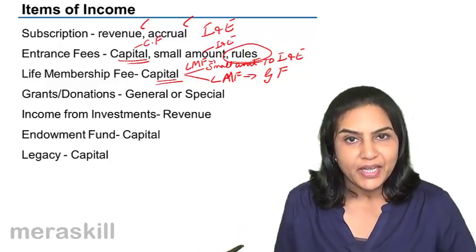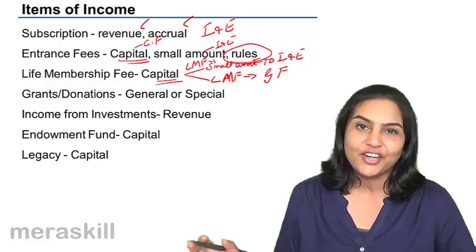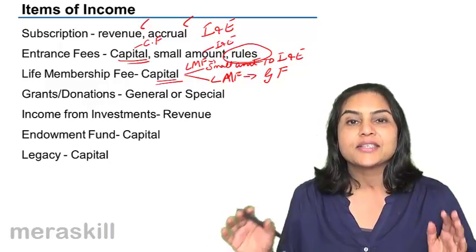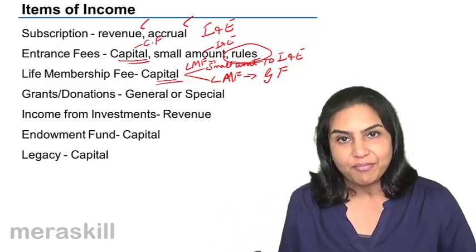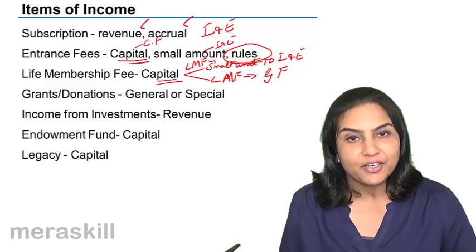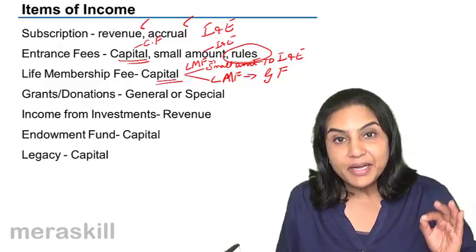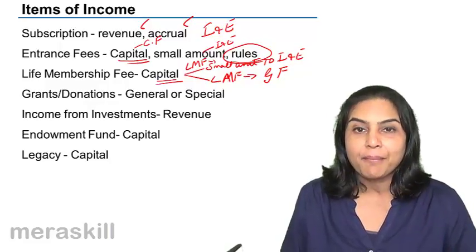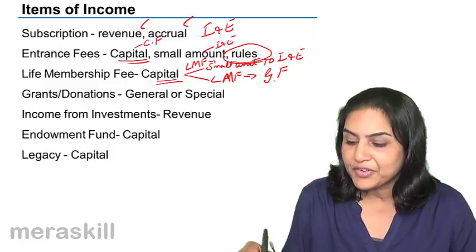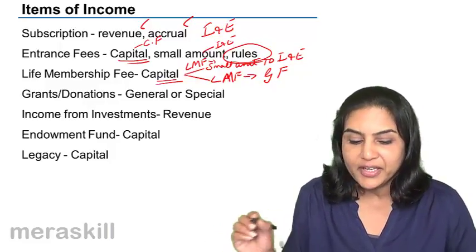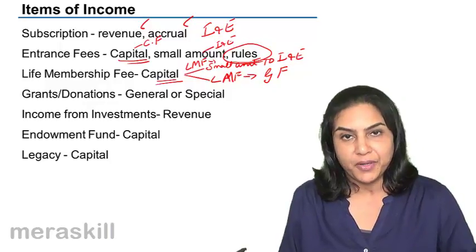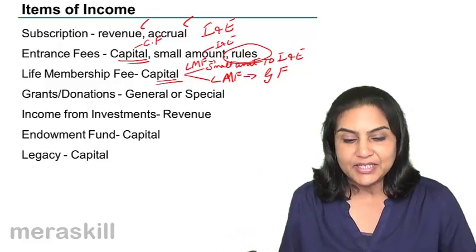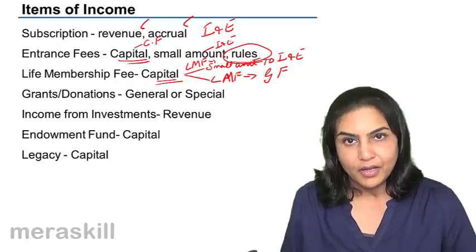Usually, if members contribute money it is called a capital fund; otherwise, it is called a general fund or accumulated fund. The life membership fee, since it is capitalized, is kept in an account called the life membership fund and shown on the liability side of the balance sheet. On termination of membership, when the person ceases to be a member, the amount paid as life membership fee may be transferred to the general fund. But life membership fees are usually treated as a capital item and taken to the liability side of the balance sheet.